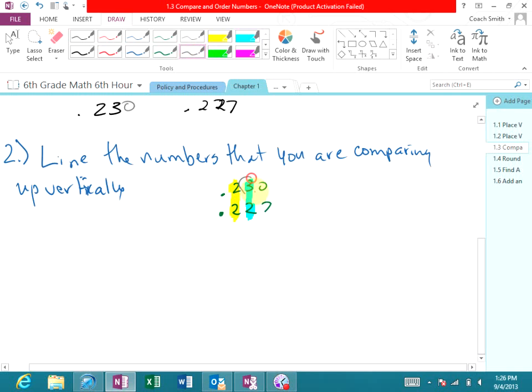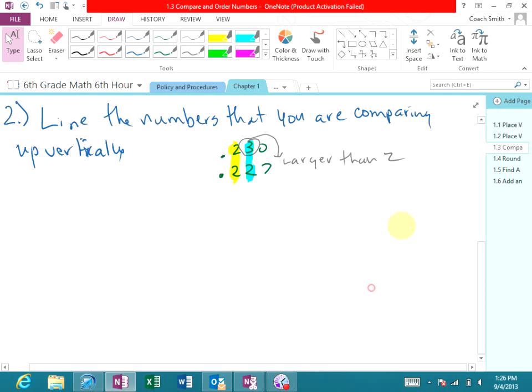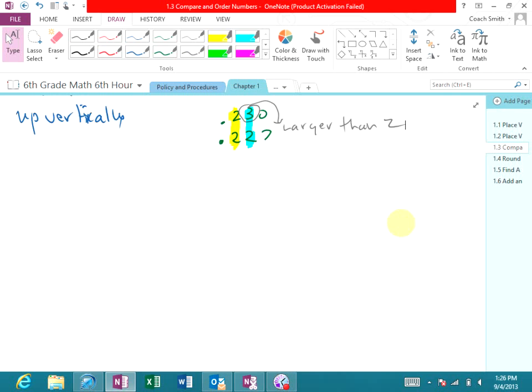If I look at the second set of second digits on each number, they are not the same. Three is larger than two. So that is why 0.23 is larger than 0.227. Now let's look at another one. So those are your basic two steps.